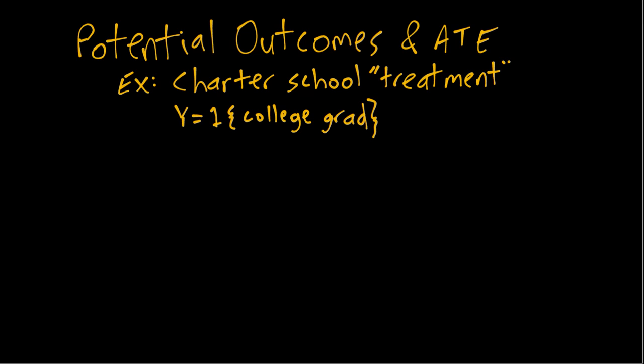This is an example of potential outcomes and average treatment effect with the running charter school example from the textbook. The treatment — a very broad word in the statistical setting — is whether or not a student attends a charter school as opposed to a conventional public school, and the outcome we're interested in is whether eventually that student graduates from college.